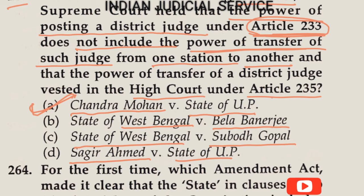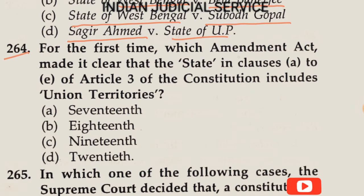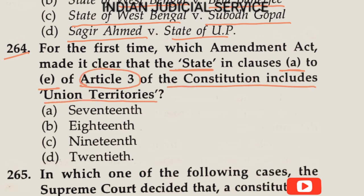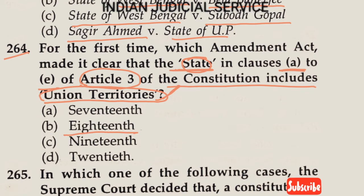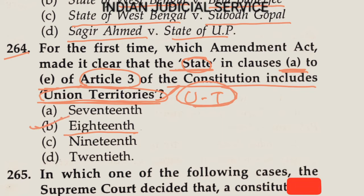Question number 264: Which amendment act first made it clear that the word 'State' in clause (a)(2)(e) of Article 3 of the constitution includes Union Territory? The answer is the 18th amendment, which clarified that 'State' in clause (a)(2)(e) of Article 3 includes Union Territory. The answer is Option B.